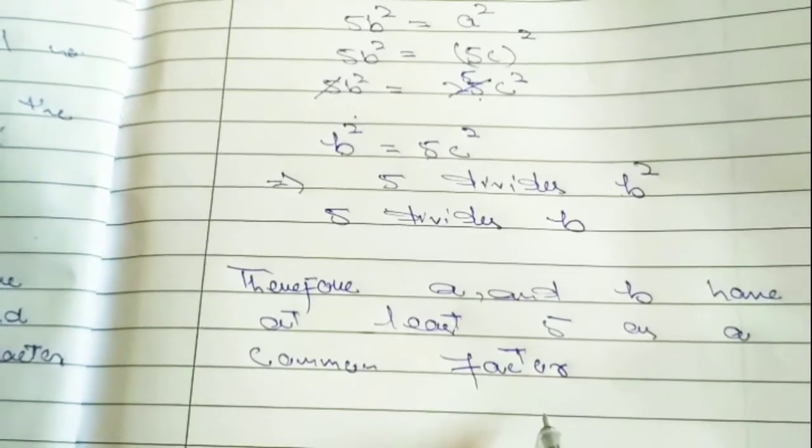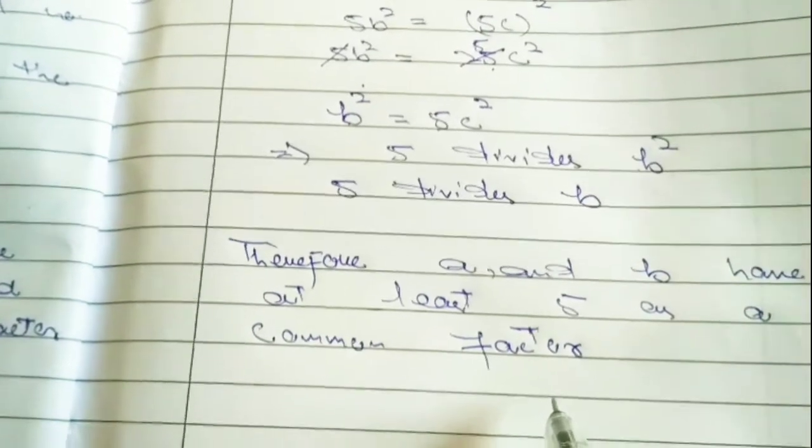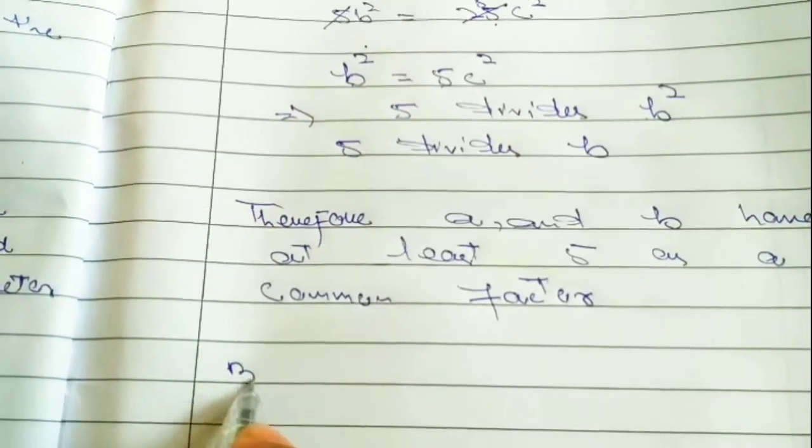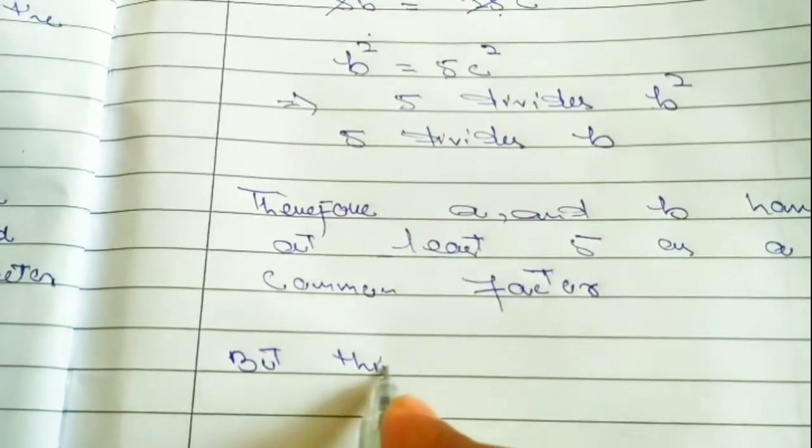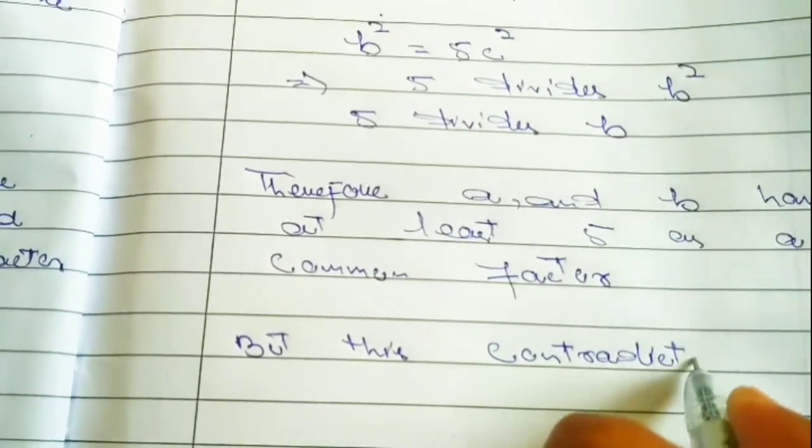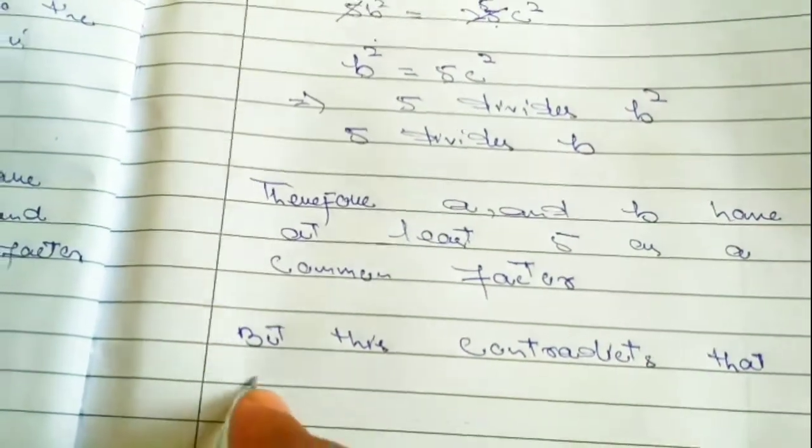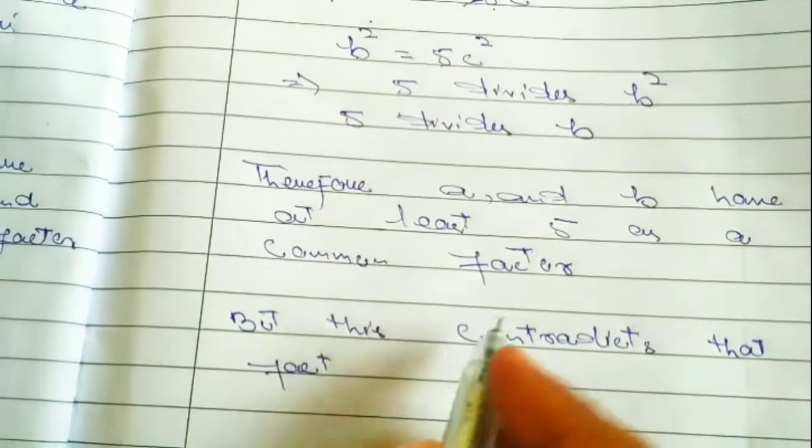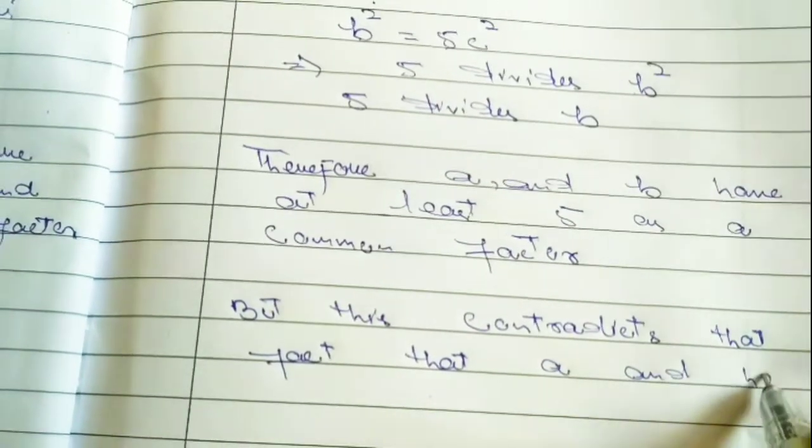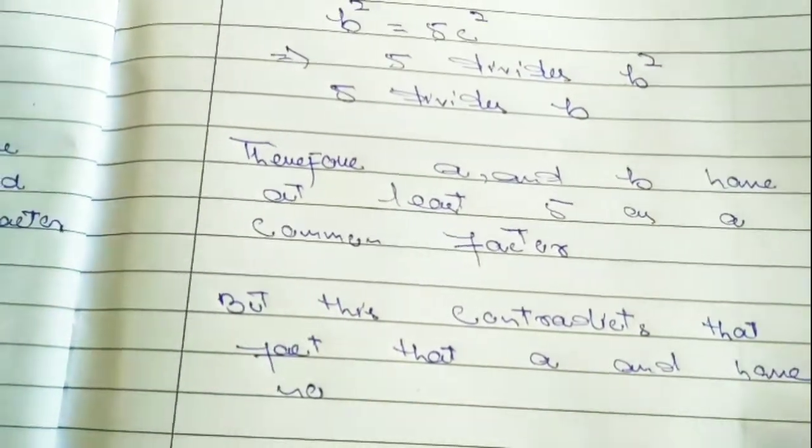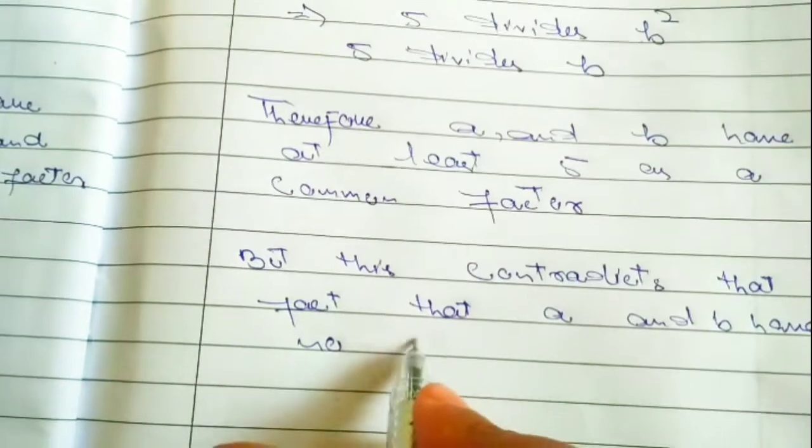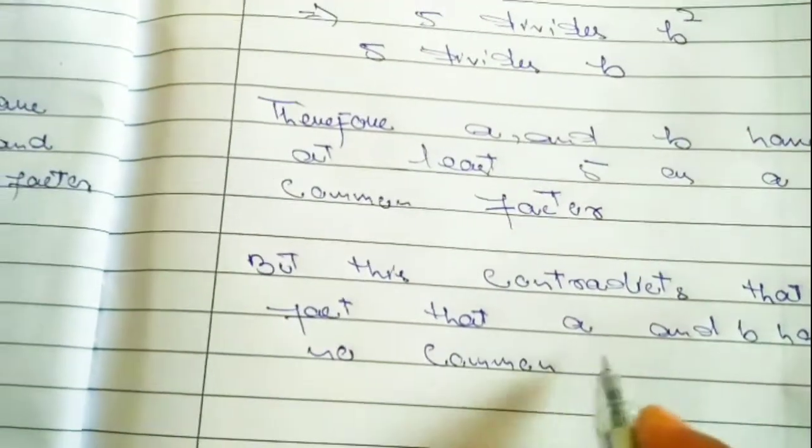But you will remember that we assumed A and B are co-prime, meaning they have no common factor other than 1. This contradicts the fact that A and B have no common factor other than 1.